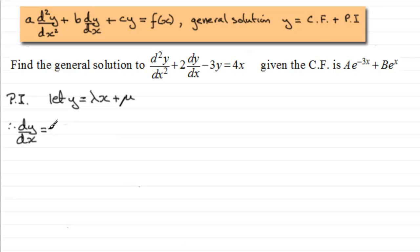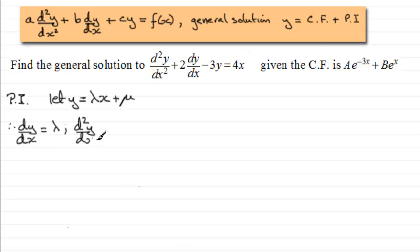dy/dx is just going to be lambda, and d²y/dx² is going to be equal to zero.